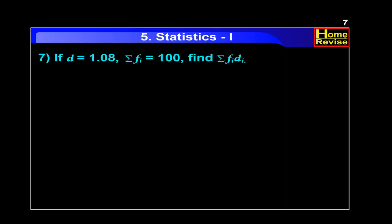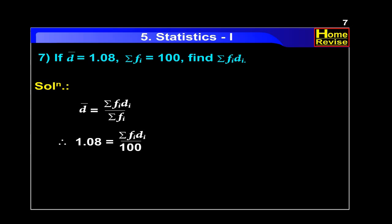Question number 7. If D-bar is equal to 1.08 and summation FI is equal to 100, find summation FI·DI. D-bar equals summation FI·DI upon summation FI. Substituting values: 1.08 equals summation FI·DI upon 100. So summation FI·DI equals 1.08 into 100, which is 108.